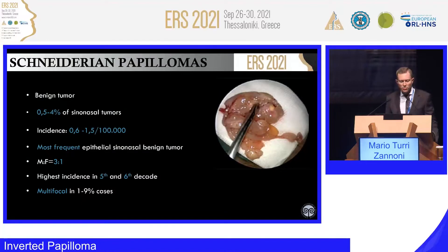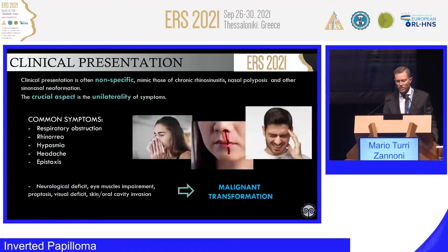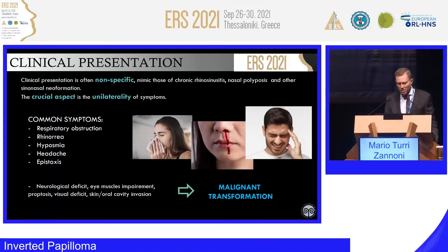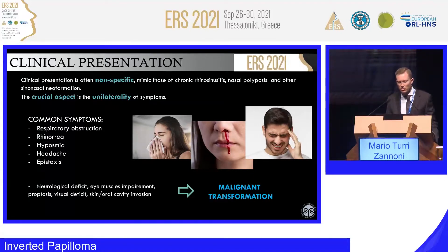As you know, inverted papilloma is the most frequent benign tumor in the sinonasal tract, affecting predominantly the male sex, with incidence especially in the fifth and sixth decade of life. Sometimes you can also retrieve some multifocal patterns of lesion. My talk is on clinical and radiological presentation in order to drive diagnosis of this disease. Patients usually present with nasal obstruction, epistaxis, facial pain, and the most important aspect is that such symptoms are unilateral. The unilaterality of symptoms is one of the most intriguing clues suggesting a benign tumor.